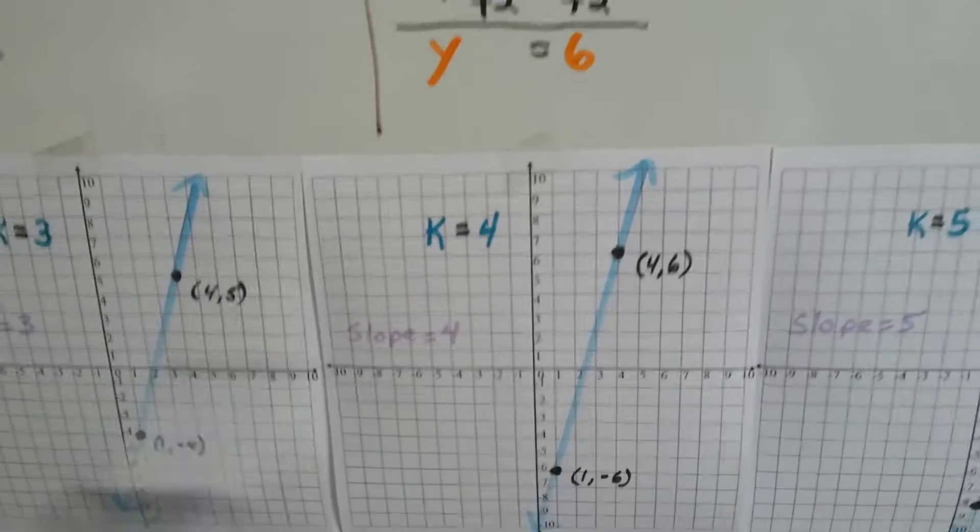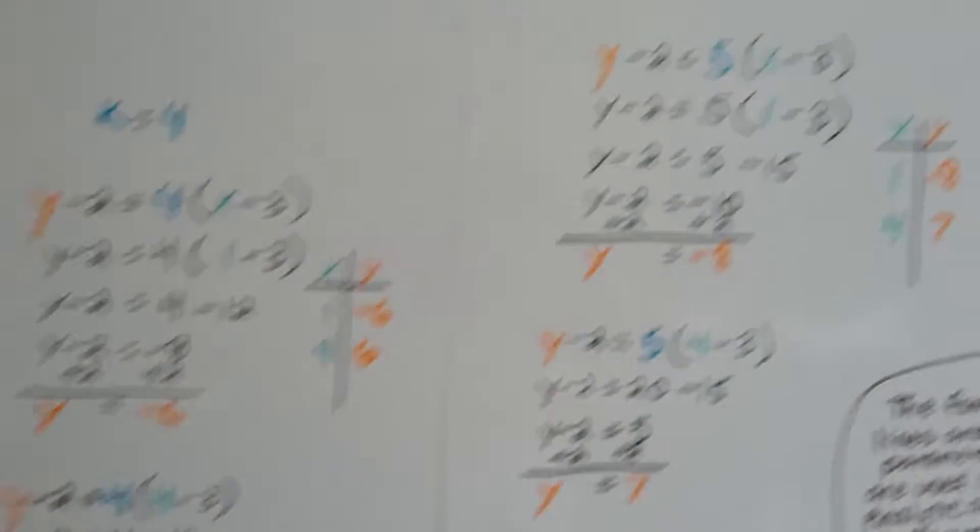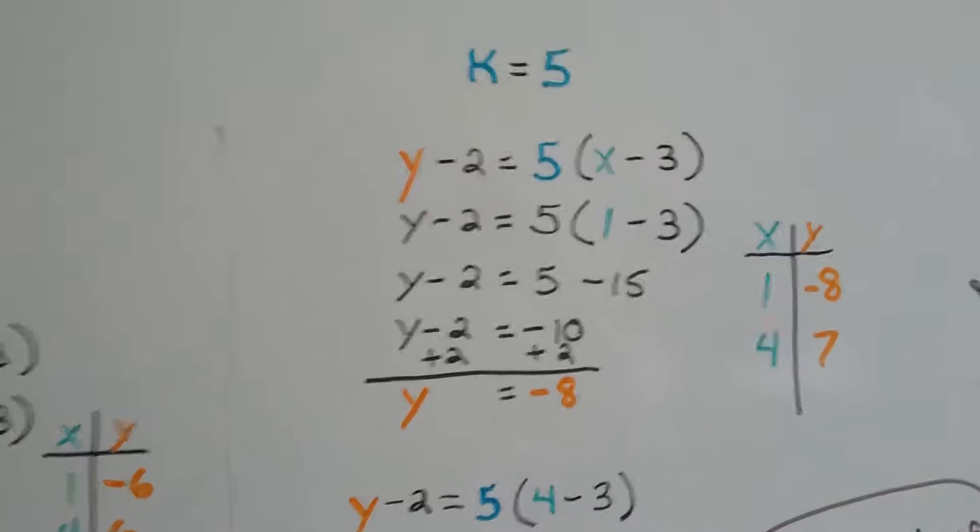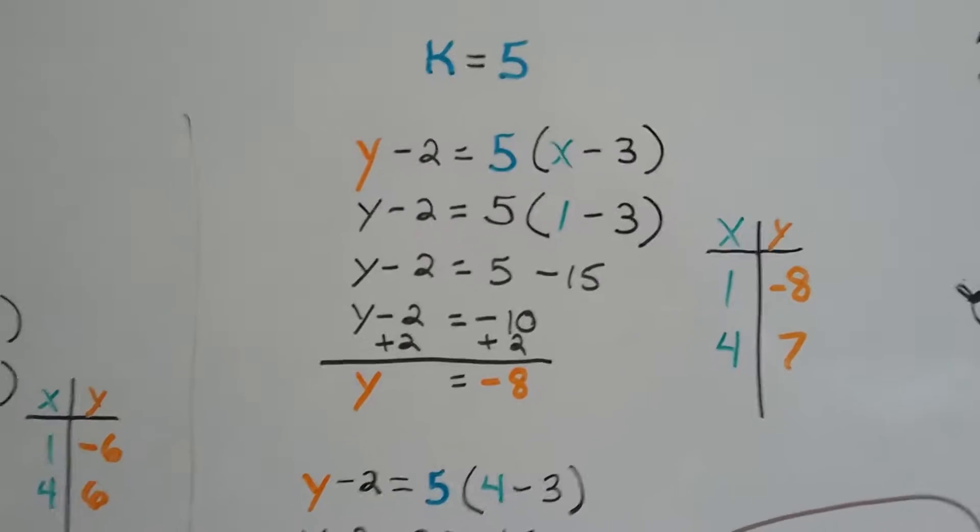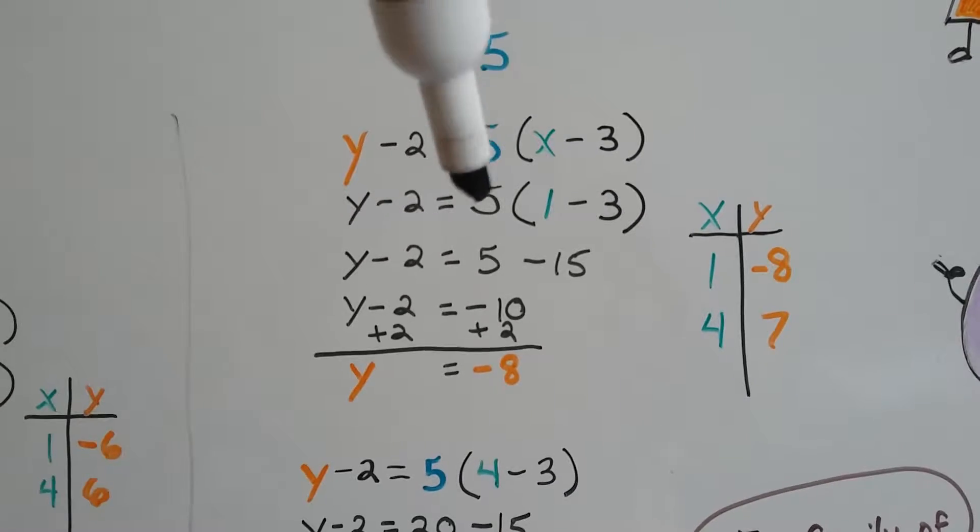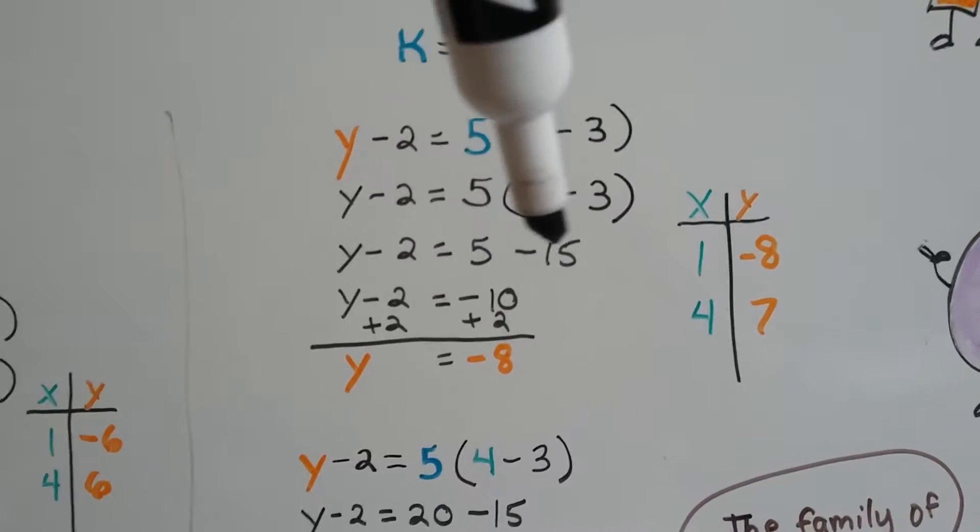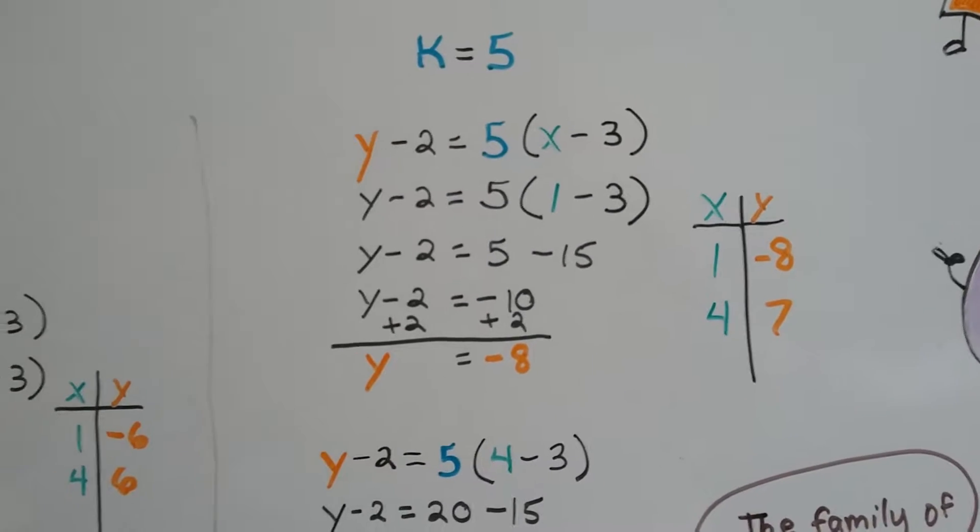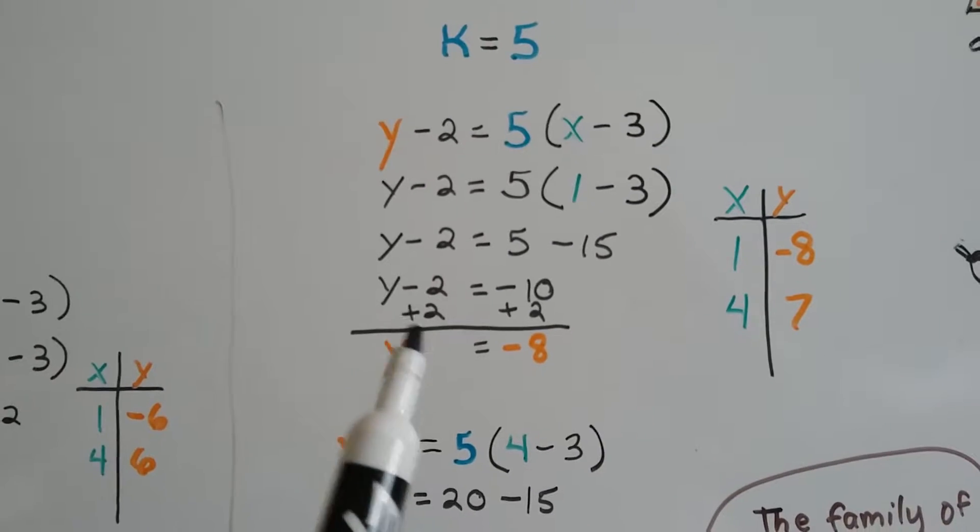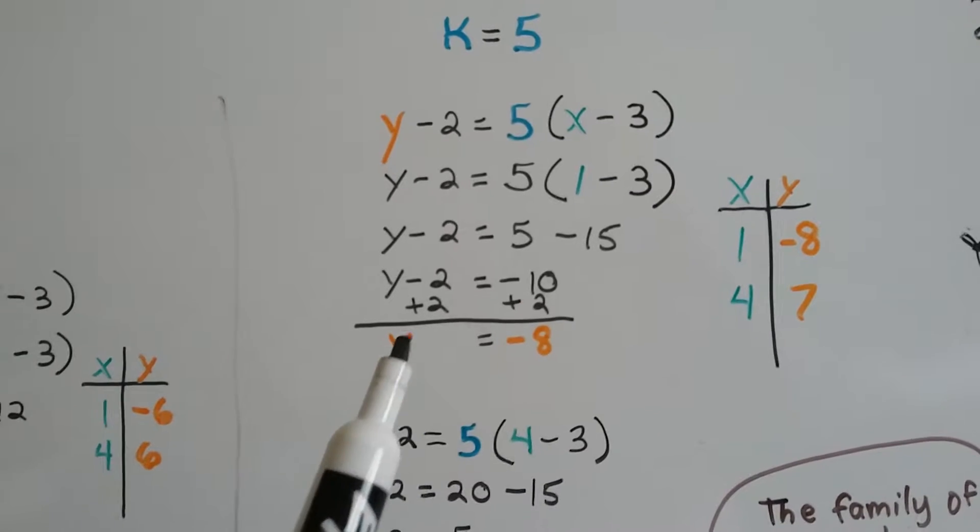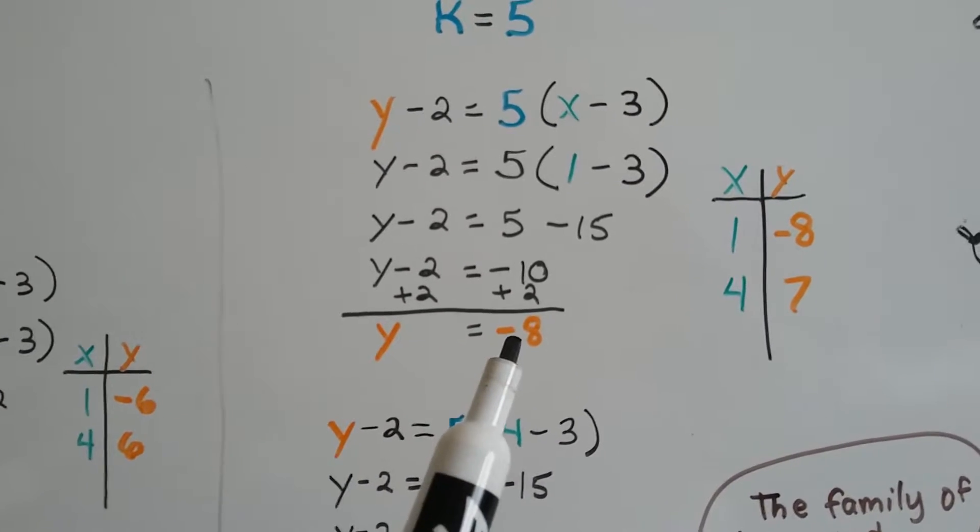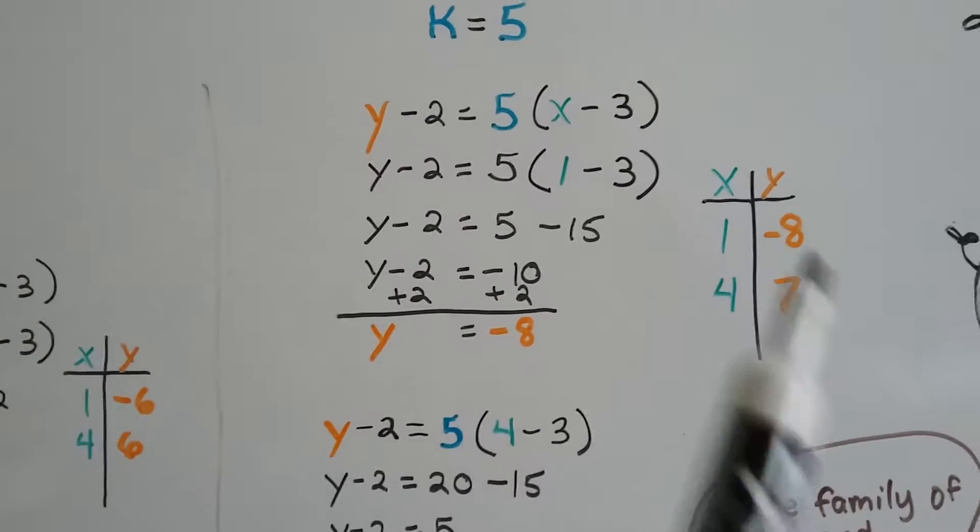I'm going to take a look at all of these at the end, so bear with me. So now we've got k equals 5, it's the last one. We set x to equal 1. 5 times 1 is 5, 5 times negative 3 is negative 15, 5 minus 15 is negative 10. We need to isolate y, so we add the 2 to each side and we get y equals negative 8. So now we have 1 and negative 8 for an ordered pair.